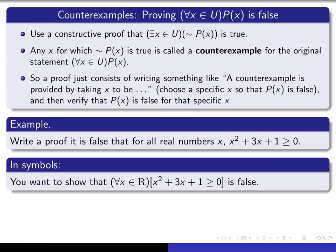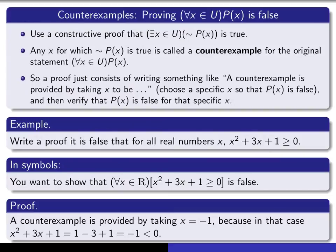If you think a little bit, you should be able to come up with one. In fact, if you take x equal to minus 1, you'll find that it works. So here's how you might write the proof. A counterexample is provided by taking x equal to minus 1, because in that case x squared plus 3x plus 1 turns out to be minus 1, which is negative.